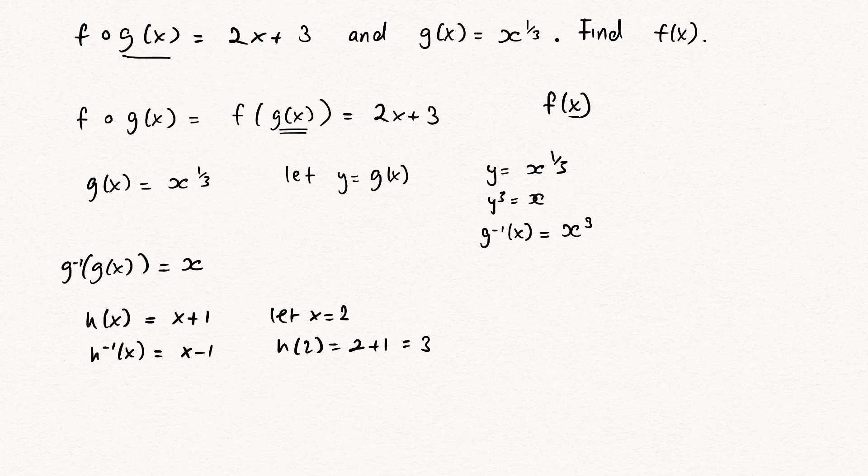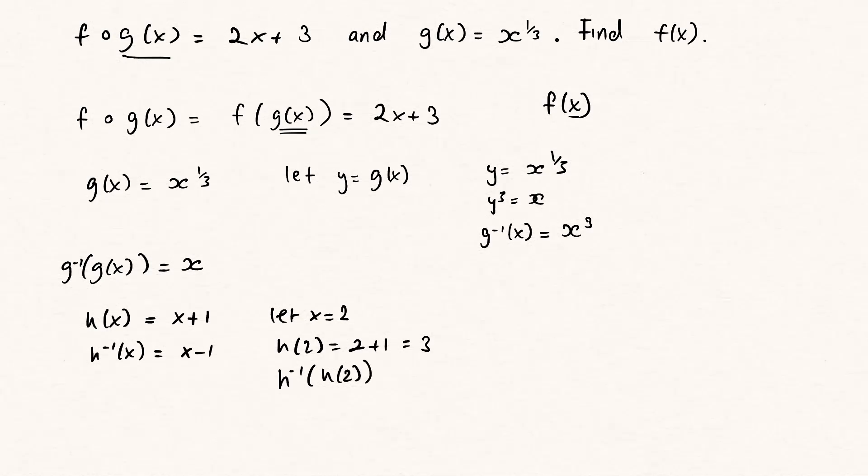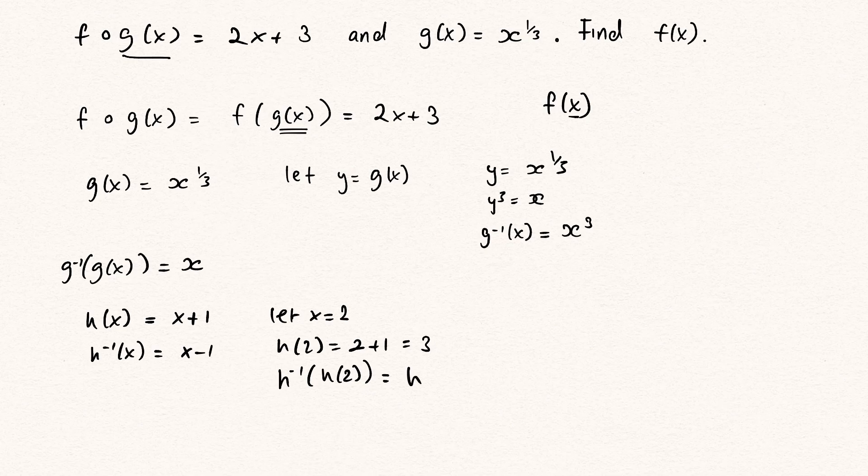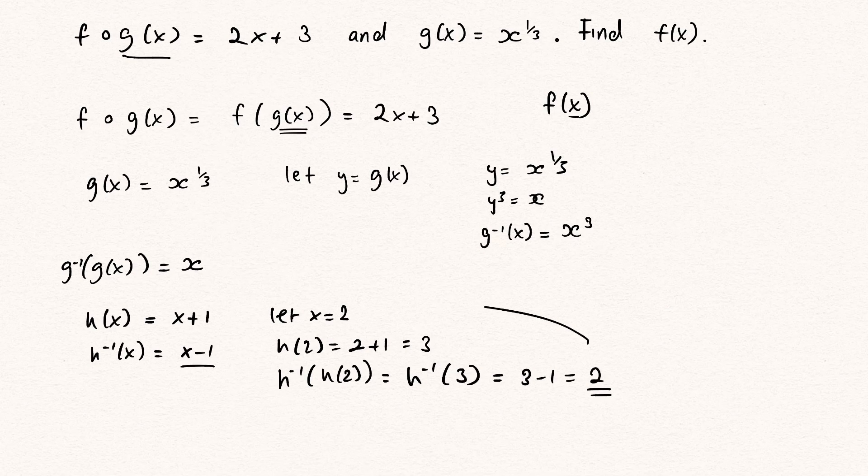And then, if we apply the inverse now, if we say h^(-1) of h of 2, we solve the inside function first. We know h of 2 is just 3, so this is h^(-1) of 3. That would just be 3 minus 1, which is 2. You can see, we're right back at where we started from. And this is exactly what we're going to use.